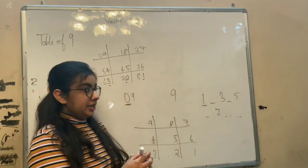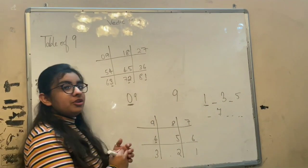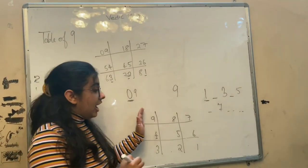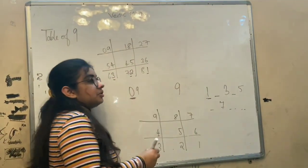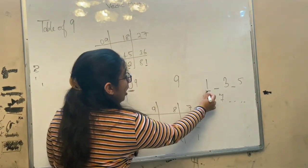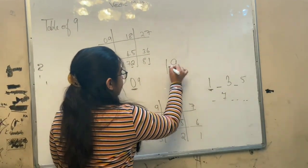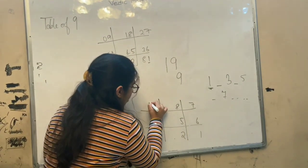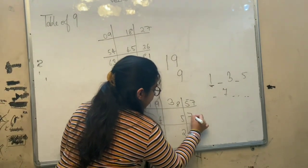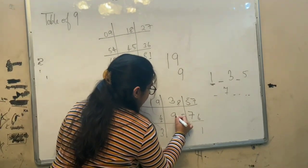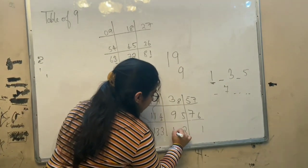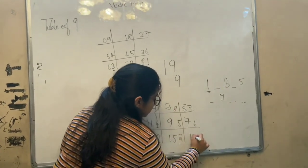Moving ahead to the grid, we have to remember that we start from the corner of the grid and write these values in front of the values already written. We will start with 1 because it is the table of 19: 1, 3, 5, 7, 9, 11, 13, 15, 17.